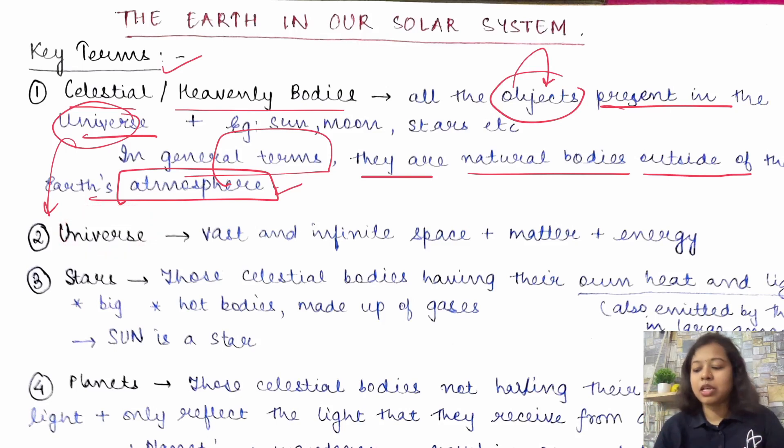Moving on to the next concept of universe. Now, what is this universe? There cannot be any exact definition of it because it is very vast and infinite space. So, it will consist of the space, that infinite space, that matter, that energy, everything encompasses the universe. What is everything that is present, is everything that is the universe.